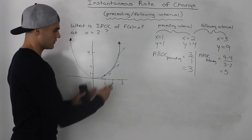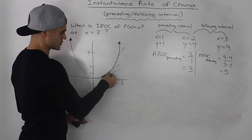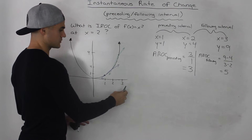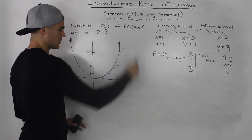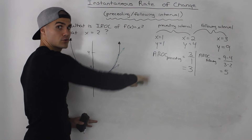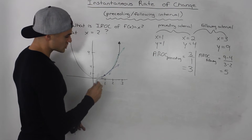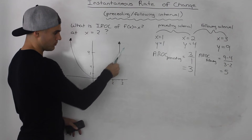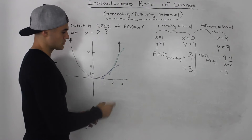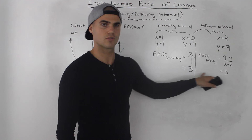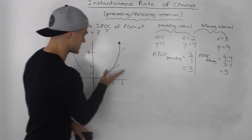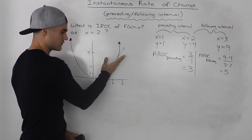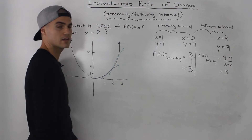Notice that the slope of the secant for the preceding interval (between x = 1 and x = 2) is less steep than the slope of the secant for the following interval (between x = 2 and x = 3). That's because this function is always increasing, so the slope of the tangent increases as x increases. The actual slope of the tangent at x = 2 is somewhere in between these two slopes.